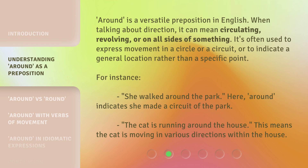For instance, 'she walked around the park' — here, 'around' indicates she made a circuit of the park. Another example: 'The cat is running around the house,' which means the cat is moving in various directions within the house.